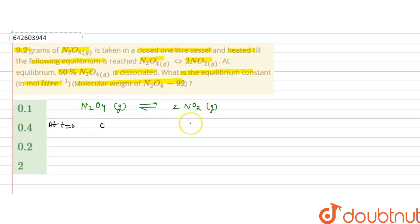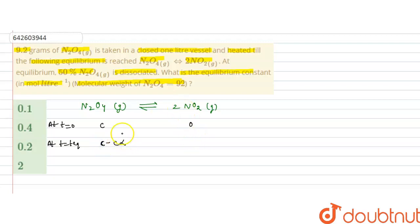At t = t (equilibrium), let's say alpha is the degree of dissociation. So the concentration of N₂O₄ will be c minus c·alpha, and 2c·alpha of NO₂ will be formed due to the stoichiometric coefficient of 2. Now we have to write the equilibrium constant.